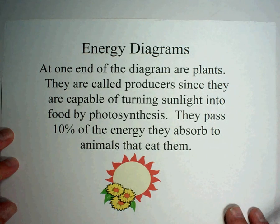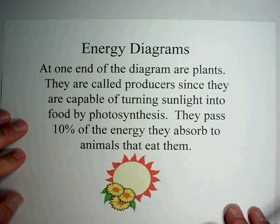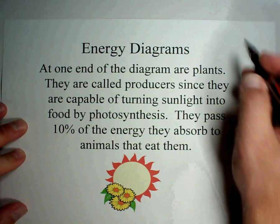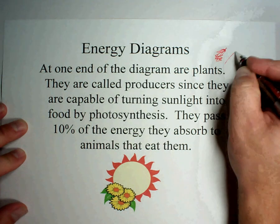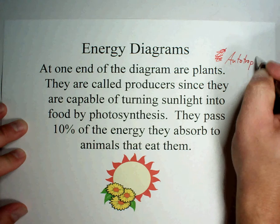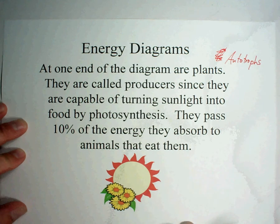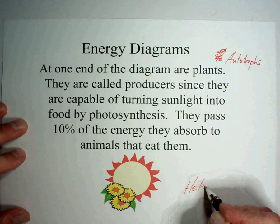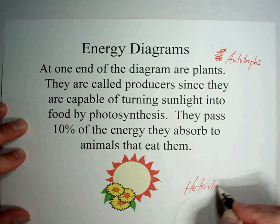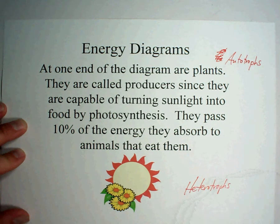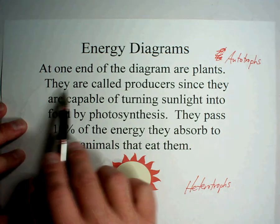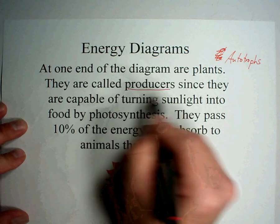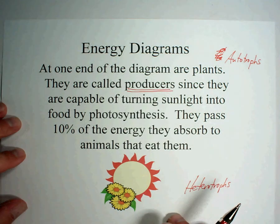Energy diagrams have to do with the arrows we were just talking about. At one end of a diagram are always plants. Plants are what are called autotrophs — they make their own food. You and I are heterotrophs; we live off things that make their own food. Within a food web, plants are called producers. They produce their own food.